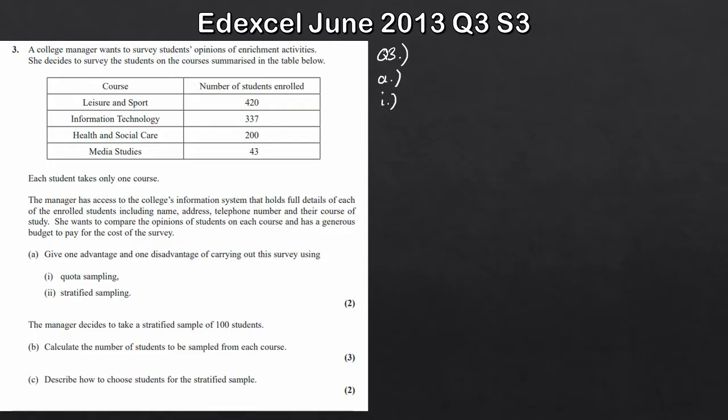He's asking us to give one advantage and one disadvantage of carrying out the survey using two different sampling methods. The first one is quota sampling. For quota sampling, an advantage that you can give is that you can say it's quick to do, quick to perform. Not like a census, we're going to save a lot of time. A disadvantage of a quota sample - one disadvantage is that there's potential for bias. So potential for bias.